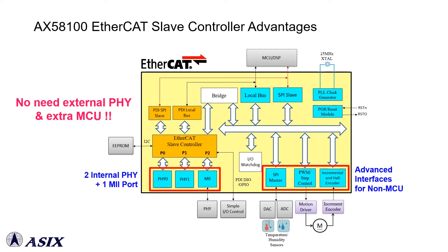The AX58100 EtherCAT Slave controller integrates two embedded fast Ethernet PHYs, and also supports additional peripheral interfaces such as PWM, ABZ, Hall encoder, SPI master, 32 digital IO, etc., for designers to easily implement AX58100 on different EtherCAT Slave applications without an extra microcontroller.